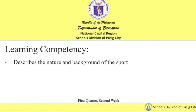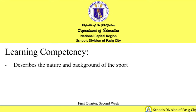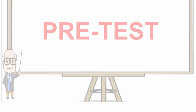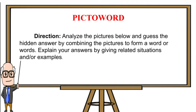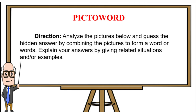Our learning competency is to describe the nature and background of the sport. Before we begin, let's have some pre-test. Pick the word: analyze the pictures below and guess the hidden answer by combining the pictures to form a word or words. Explain your answers by giving related situations and or examples.